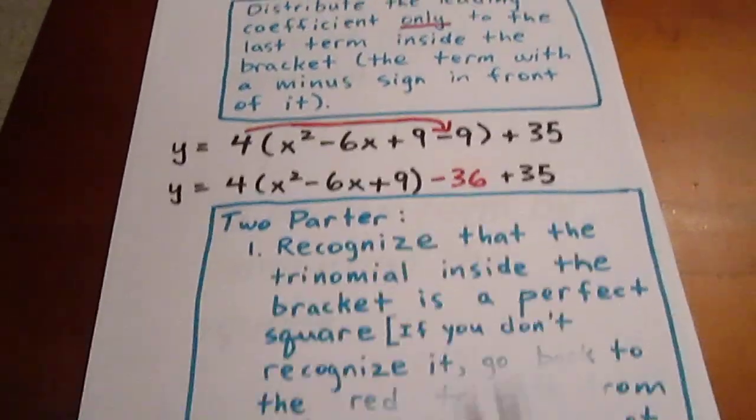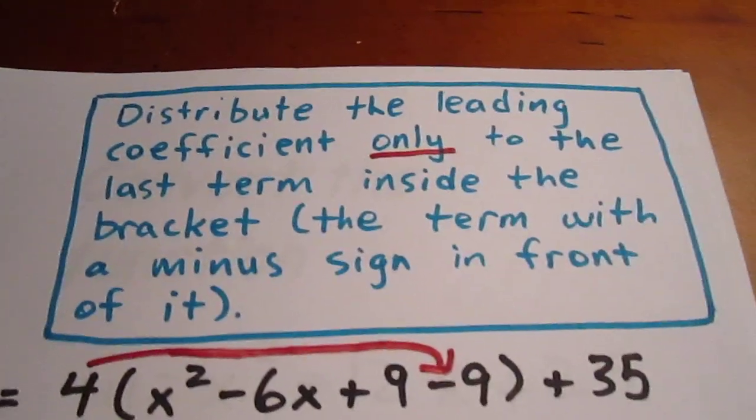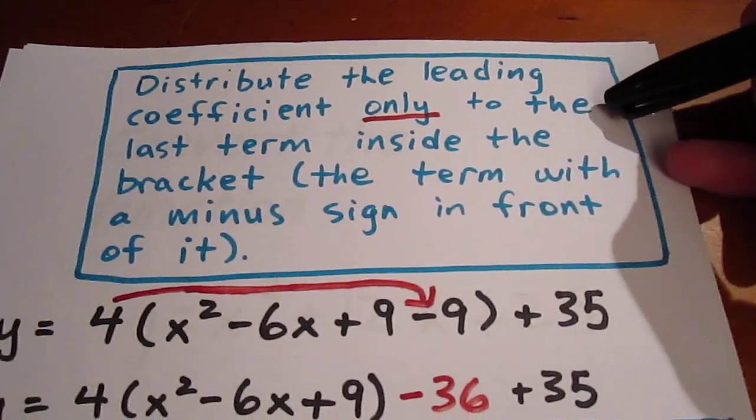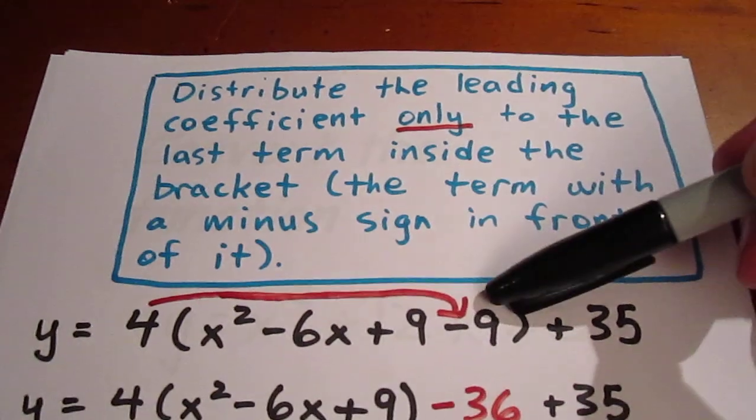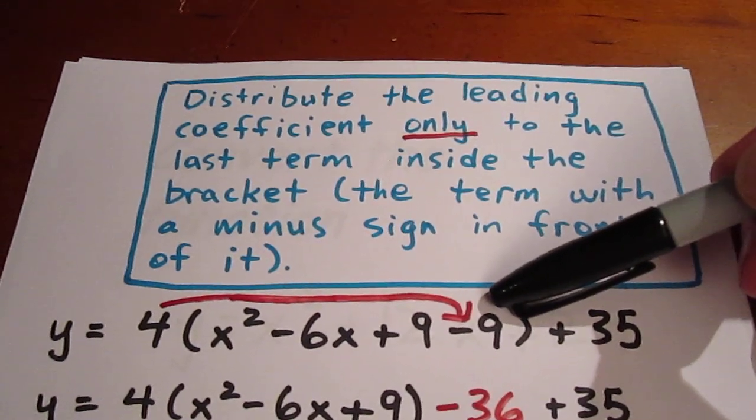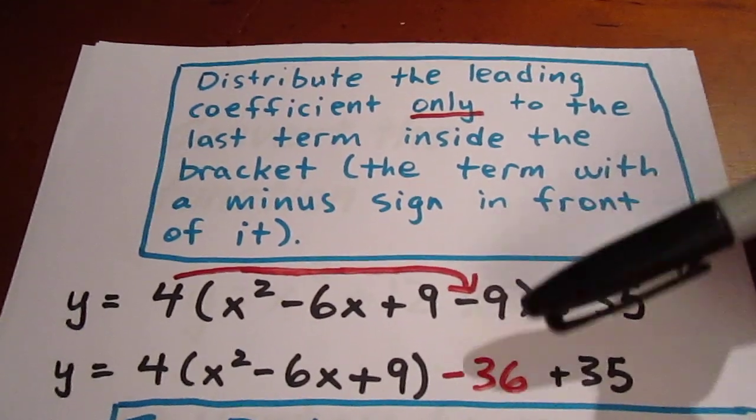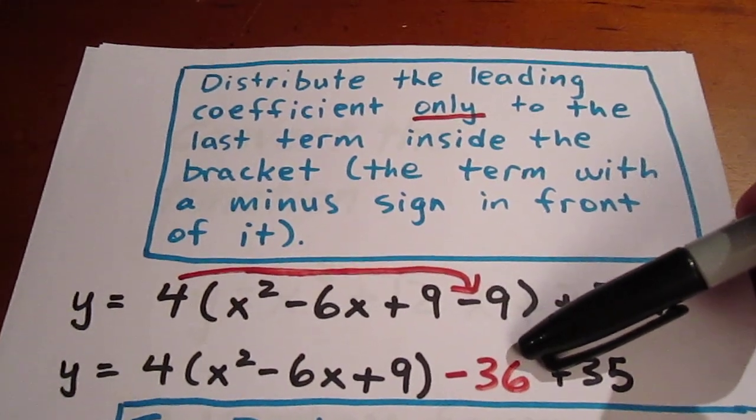What we then do is distribute the leading coefficient of 4 only to the last term inside the bracket. We're only going to distribute it to that -9. What that's going to do is kick a -36 out of the bracket.